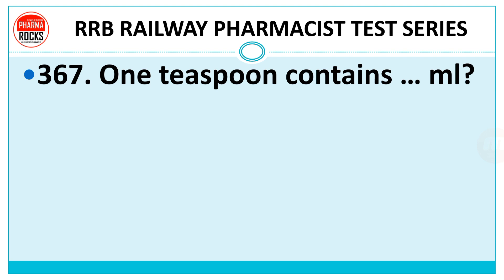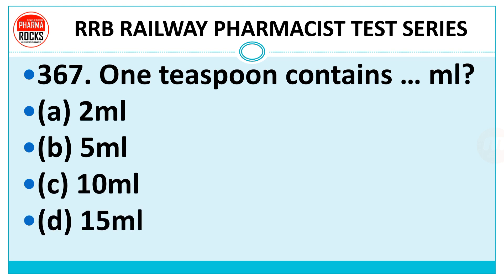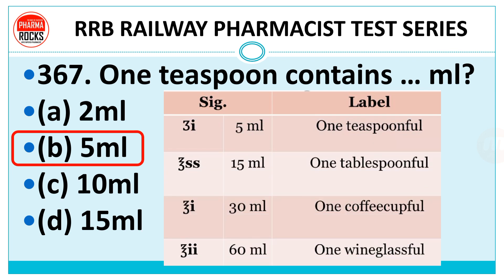Question 367: One teaspoonful contains how much ml? Options: 2 ml, 5 ml, 10 ml, or 15 ml. Right answer is 5 ml. One teaspoon = 5 ml (sign: 3i). One tablespoon = 15 ml. One coffee cup = 30 ml. One wine glass = 60 ml. So the order from least to most is: teaspoon, tablespoon, coffee cup, wine glass.